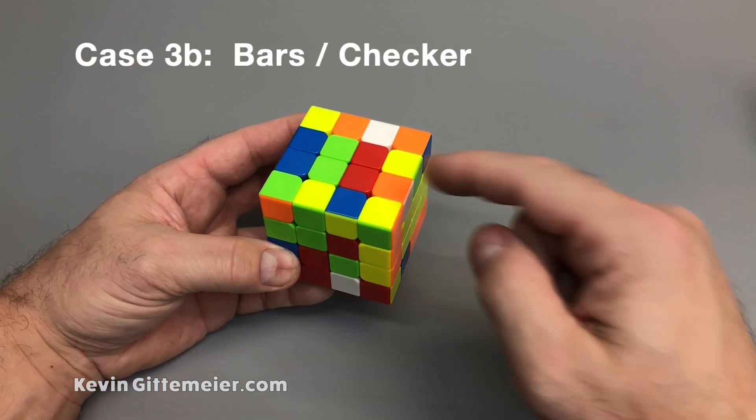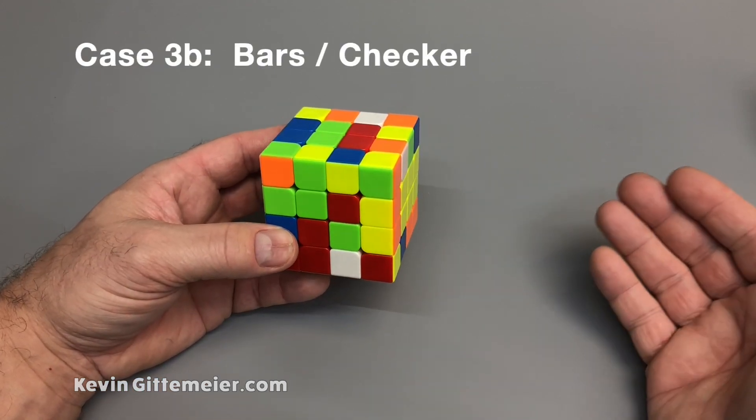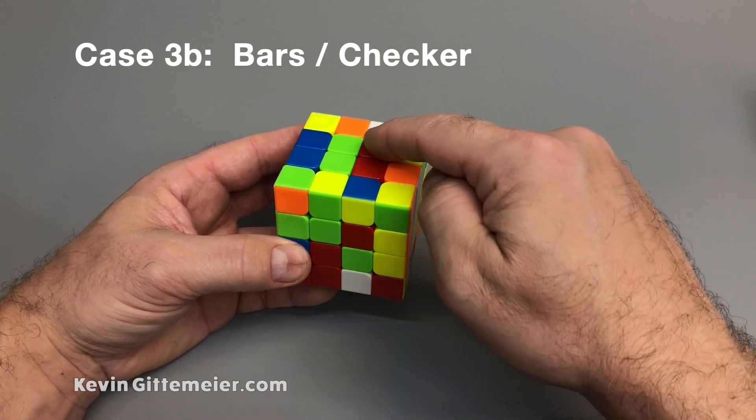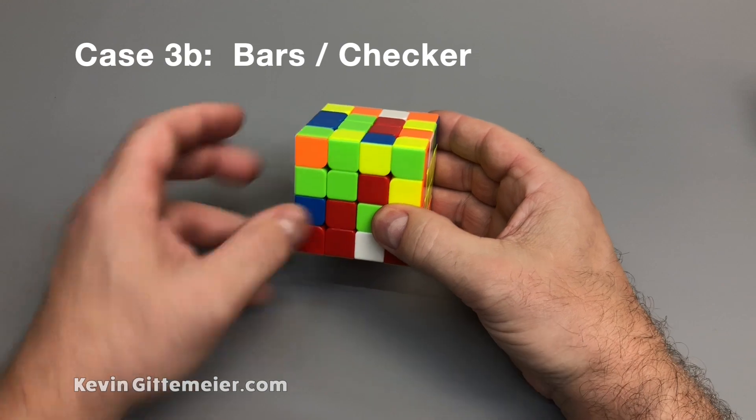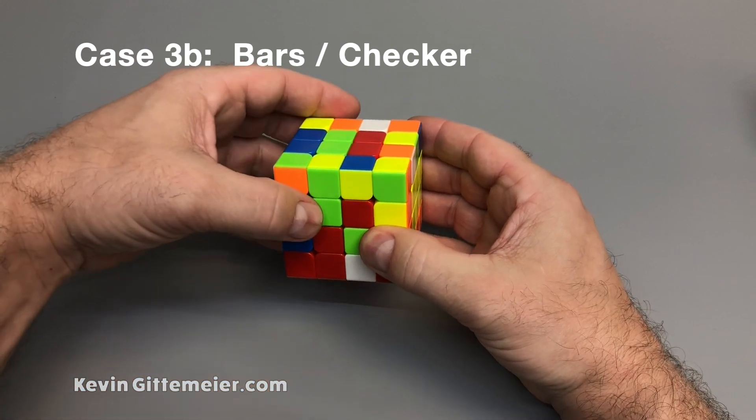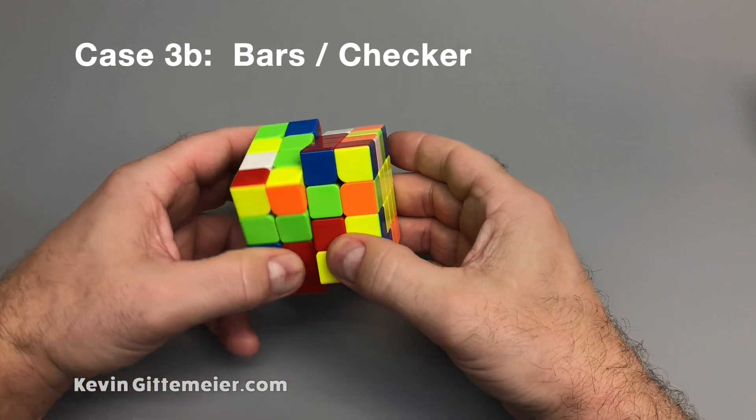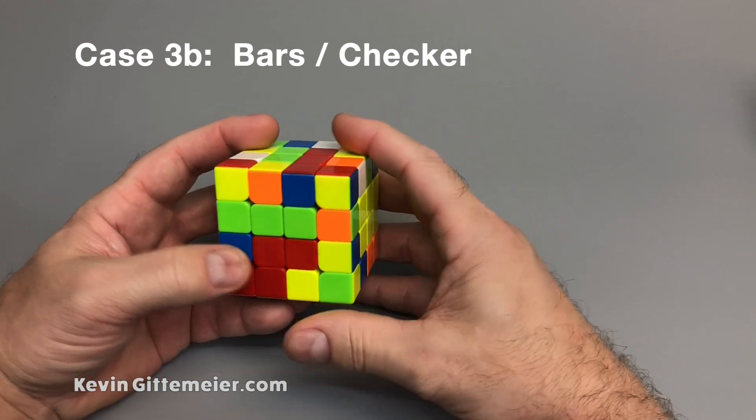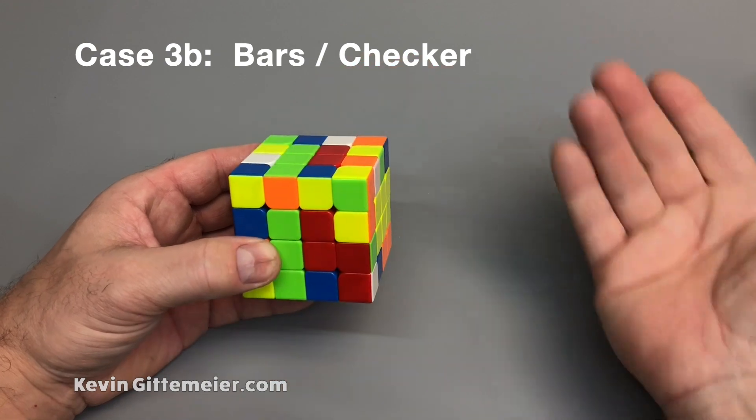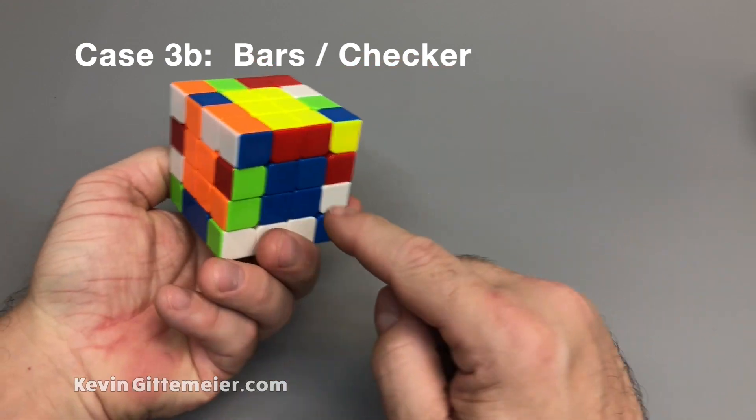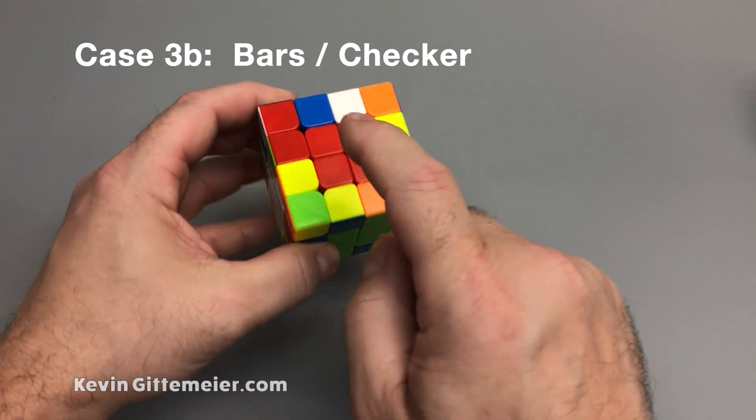So if you have the opposite pattern when bars on top and checker on the front, it doesn't matter. It's still the same principle. What we're going to do is just focus on one color. I'll choose red for this example. I notice the placement of this red. When I slice down, I just turn this to match that red when I slice back. Then I move this red up or the green down. It doesn't matter. And they're all solved. BOGR—blue, orange, green, red.